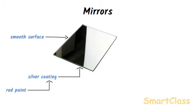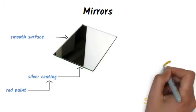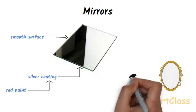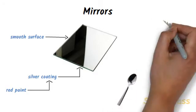The silver metal coating makes the plain mirror shiny, which gives the maximum reflection of light. The red paint behind the silvered surface reduces the transmission of light through the mirror and also protects the delicate silver coating. The reflection of light in a plain mirror takes place at the silvered surface inside it. Some common objects having very smooth surfaces are mirrors, polished metal objects, and still water surfaces.